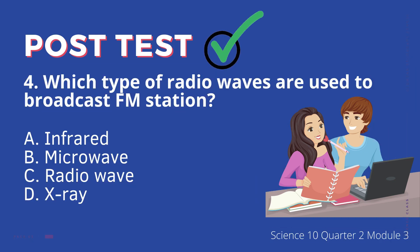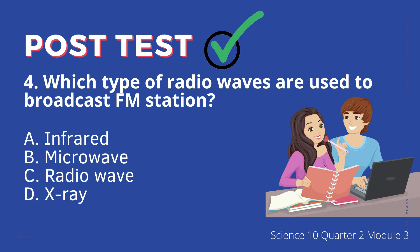4. Which type of radio waves are used to broadcast FM stations? A. Infrared, B. Microwave, C. Radio wave, D. X-ray.